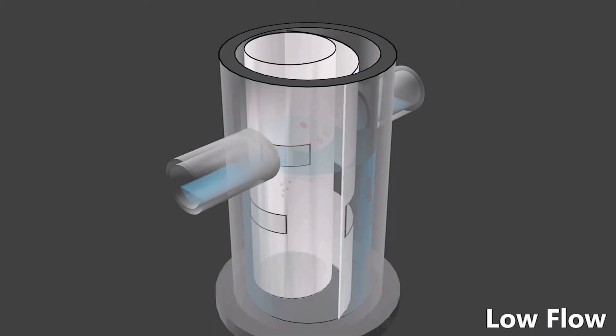During high flows, since the opening into the inner chamber is smaller than the size of the pipe, large floatables and trash bypass the inner chamber and collect behind the outer baffle wall.